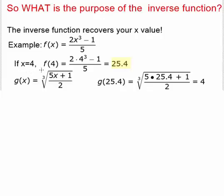The inverse function of f of x is the cube root of 5x plus 1 over 2. Because when we're reversing the operations of cubing, doubling, subtracting 1, and then dividing by 5, we have to reverse in reverse order and multiply by 5, add 1, divide by 2, and then take the cube root.